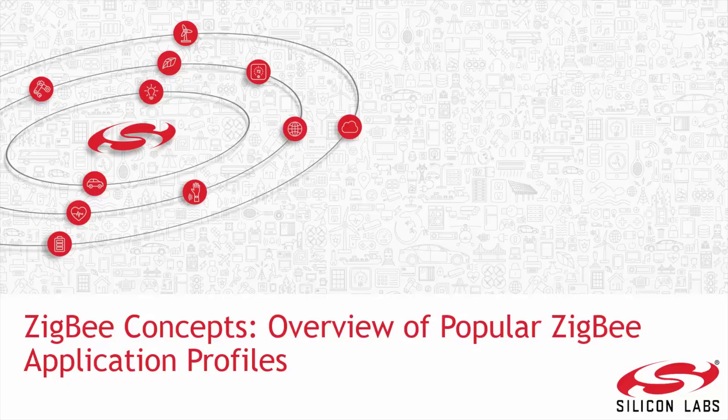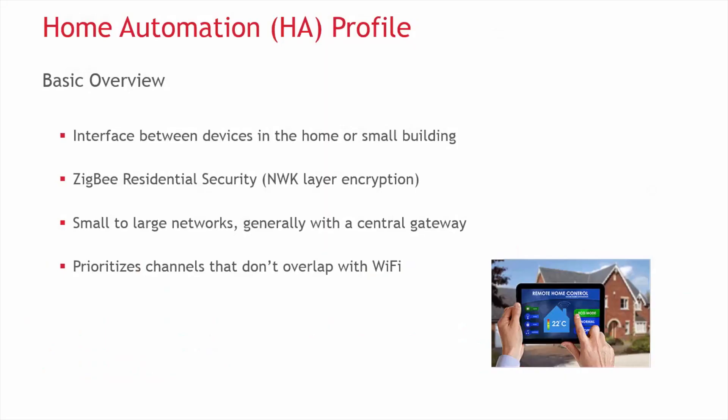This video will go through the most commonly used application profiles such as Home Automation, Smart Energy, and Zigbee Light Link. These profile specifications are available on zigbee.org for free. It is important to point out that Zigbee is planning on merging all of the profiles in approximately late 2015. Let's discuss the profiles in a bit more detail.